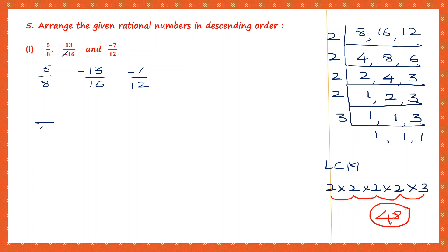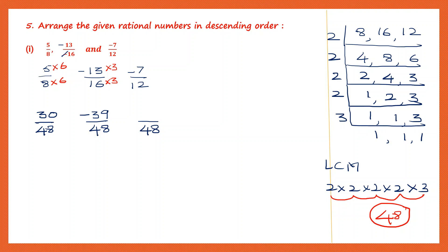We use 48 as the common denominator. For the first rational number: 8 sixes are 48, so multiply 5 by 6 — 5 sixes are 30. Second: 16 threes are 48, so multiply 13 by 3 — 13 threes are 39, so minus 39. Third: 12 into 4 is 48, so minus 7 into 4 — minus 7 fours are minus 28. Now we have three rational numbers with the same denominator and can check the numerators.